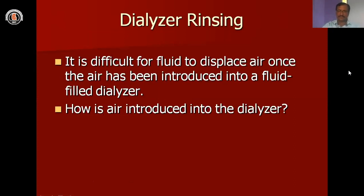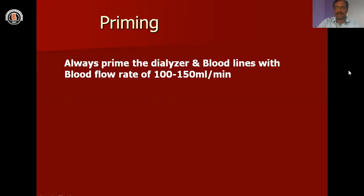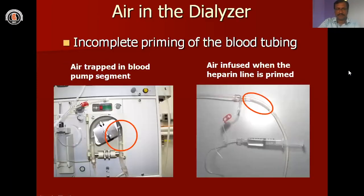How is air introduced into the dialysis and what are the causes of air introduced into the dialysis? When we are doing priming, we should know the correct priming level. The priming should be maintained at the rate of 100 to 150 ml per minute. We should not cross the priming beyond this limit — we need to be very careful. Always prime the dialysis and blood tubing at the rate of 100 to 150 ml per minute.